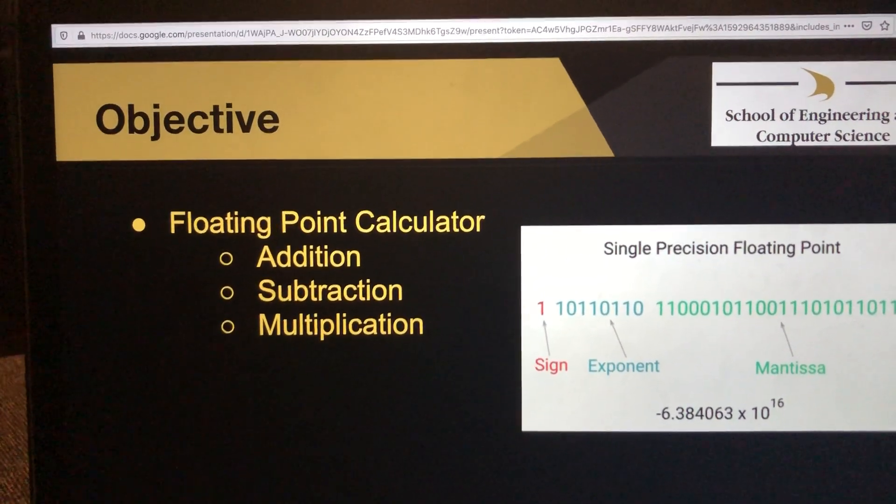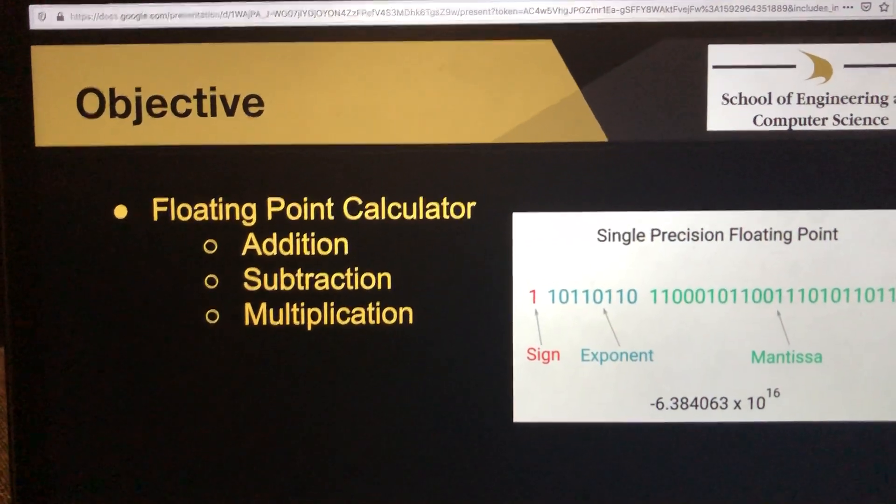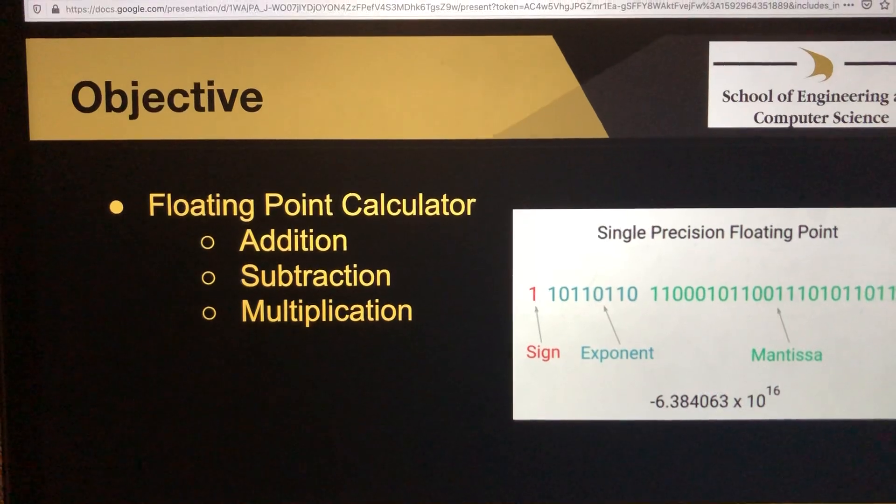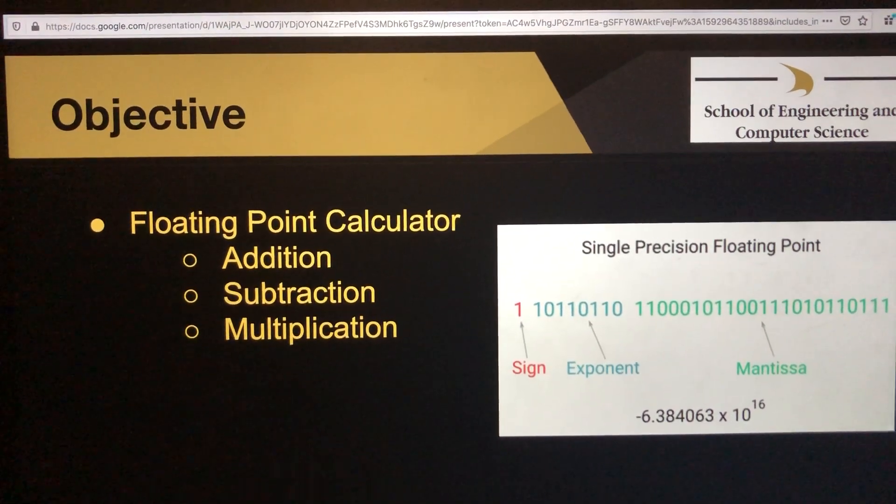The remaining bits are the mantissa. This makes up the real number, multiplied by the exponent value to get your final number.